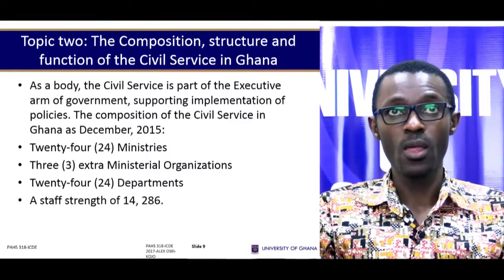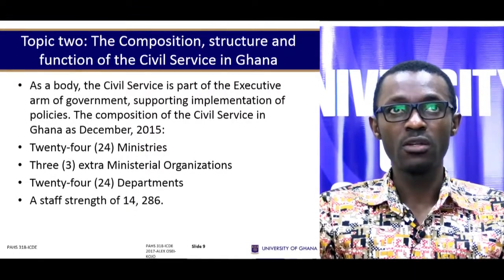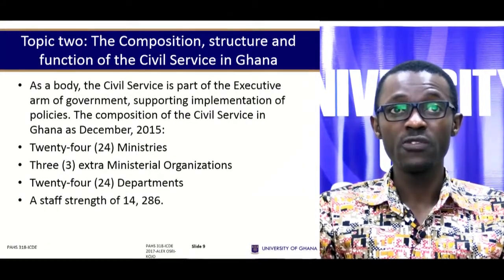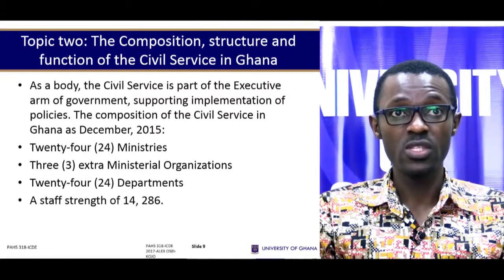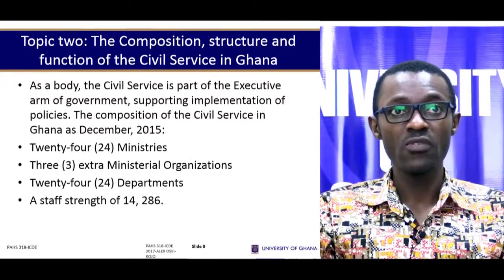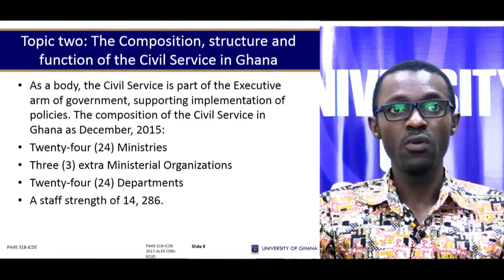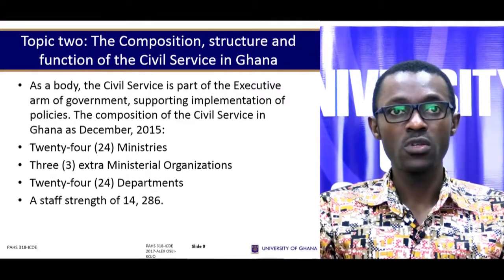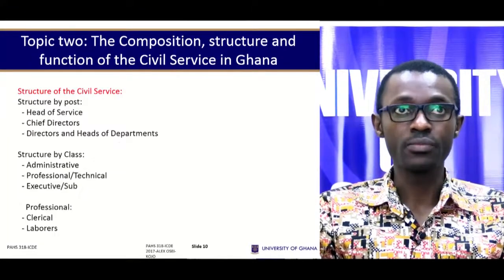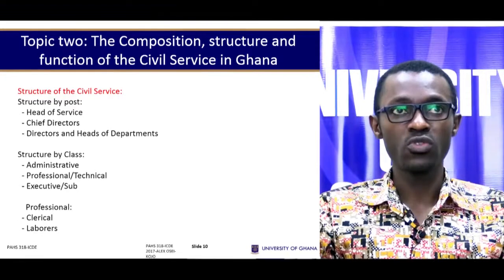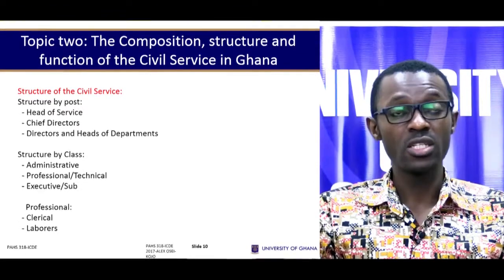Topic 2: Composition, structure, and function of the civil service in Ghana. According to the 2015 Annual Performance Review of the Civil Service, Ghana's civil service comprises 24 ministries, 3 extra-ministerial organizations, 24 departments, and a staff strength of 14,286 comprising men and women. In terms of structure, we have structure by post, structure by class, and the professional class.